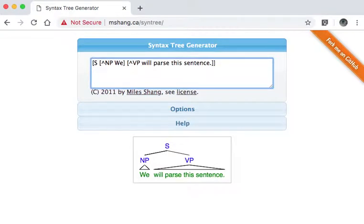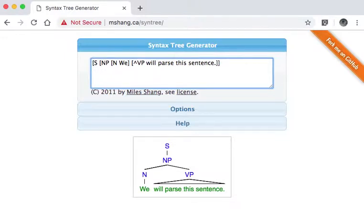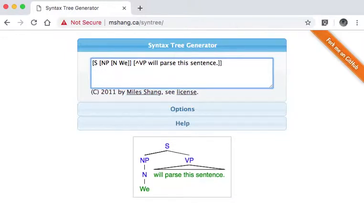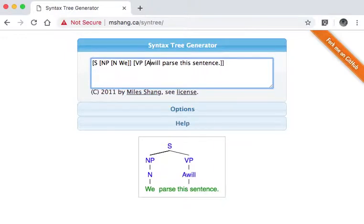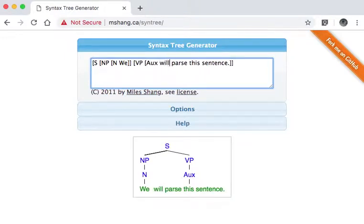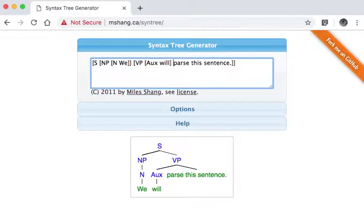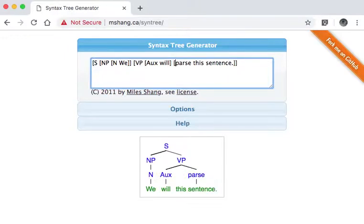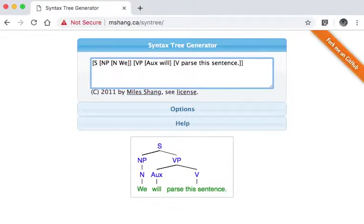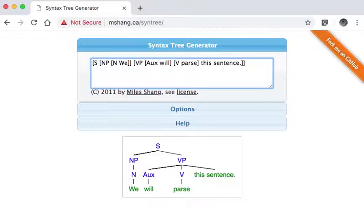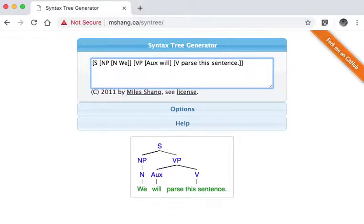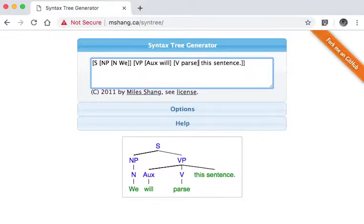Okay, and we can keep going further. The noun phrase we is actually composed of simply the noun we like so. The verb phrase we can break down, it has an auxiliary will and it has a verb parse. Notice the closing brackets are important if I don't have them in then the tree looks a bit wrong.